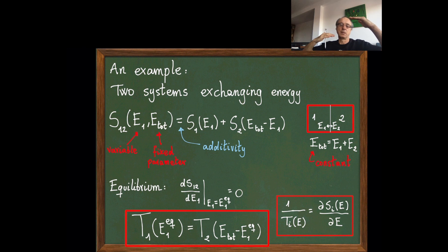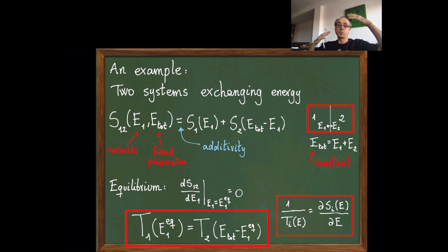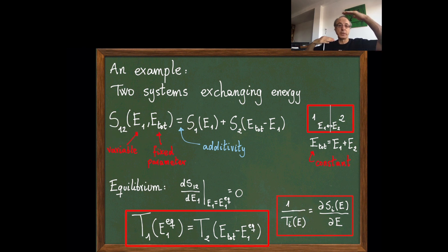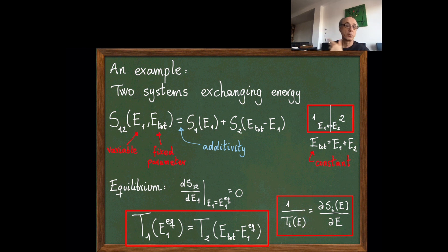If T1 is bigger than T2, this means energy will flow from system one to system two—not because the temperatures are different per se, but because the entropy will increase by transferring energy until the temperatures are equal. So we see that the flow of heat from a hot system to a cold system is just an attempt of the whole global system to maximize the entropy.